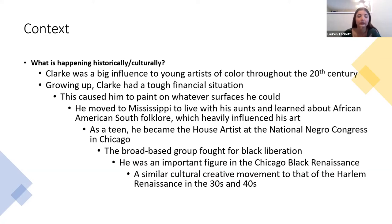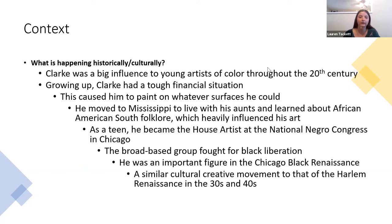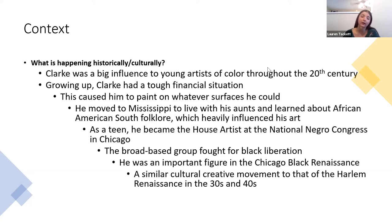When he was young, he moved to Mississippi to live with his aunts and learned about African American Southern folklore, which heavily influenced his art. When he moved back to Chicago as a teen, he became the house artist at the National Negro Congress in Chicago — a broad-based group that fought for Black liberation, especially in economic situations. He was an important figure in the Chicago Black Renaissance, a cultural movement happening not only in Harlem but in Chicago and other places in the North.